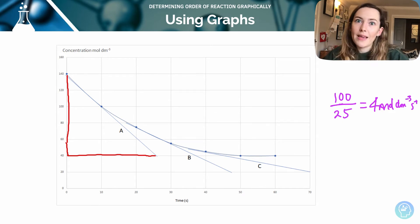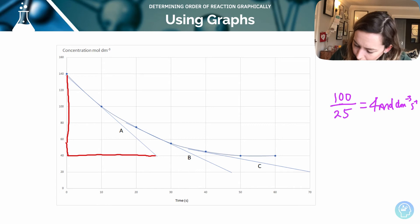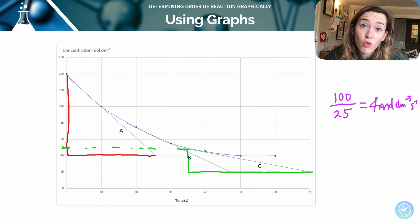We can do the same for B and for C. So let's quickly have a look at C. I can visually see that the gradient is a lot shallower here, so I'm expecting a lower number. I've got my point here drawn and I'm going to calculate this. So I'm making it easy for myself.